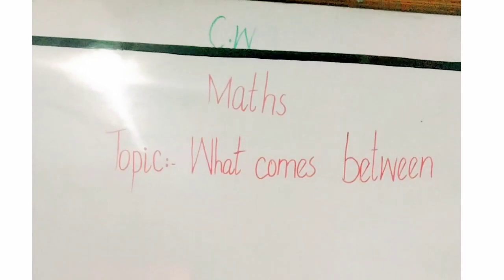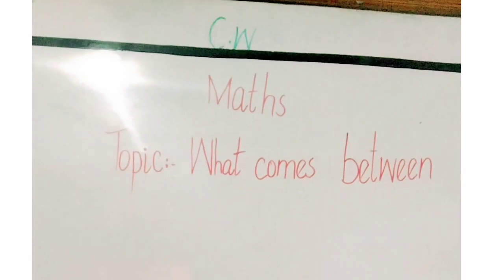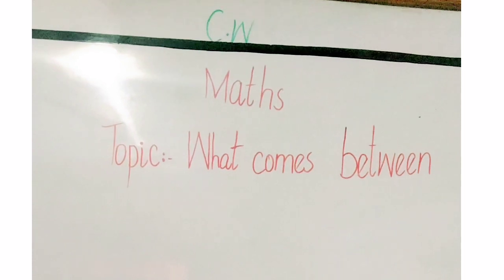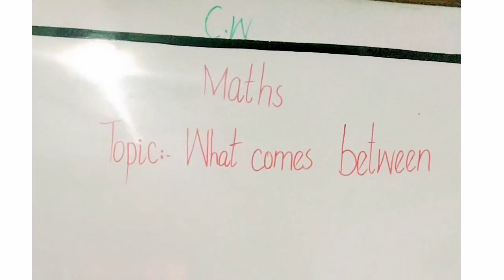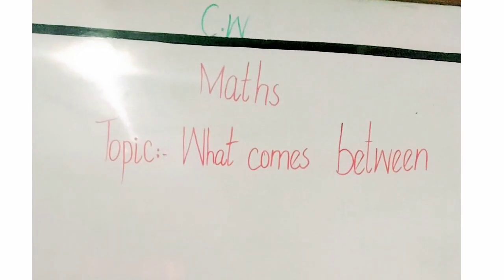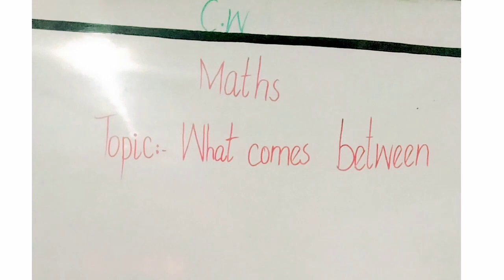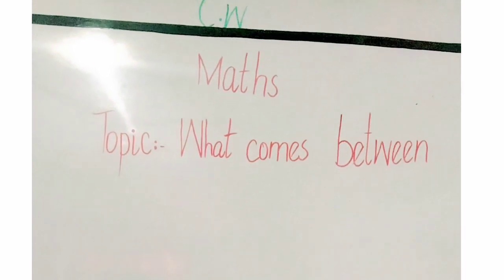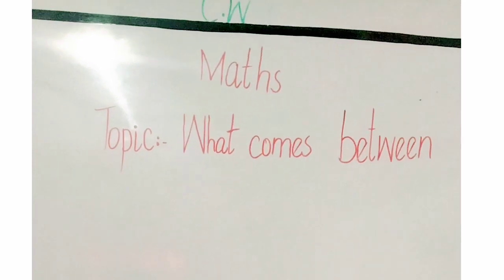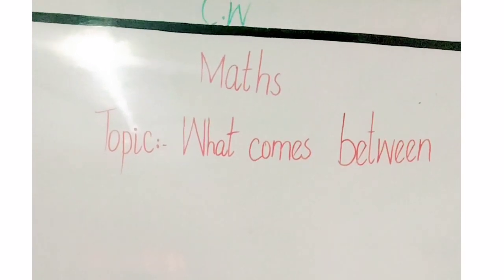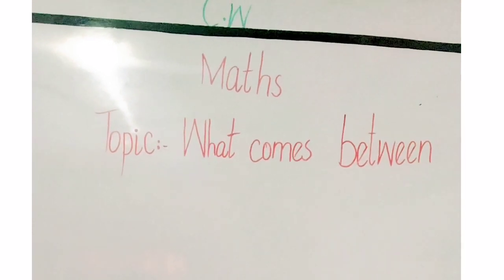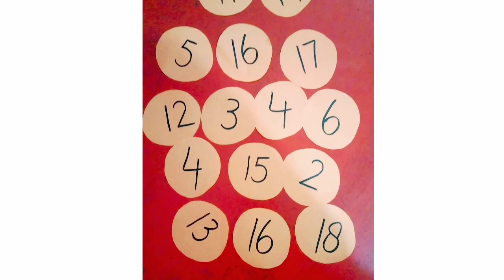Kids, today our topic is what comes between. What does 'what comes between' mean? It means if something or some object comes between two objects — like if we have number 1 and number 3, what comes between them? Number 2. Number 2 comes between 1 and 3. In this video we discuss what comes between. Let's start and explain with digits and numbers.